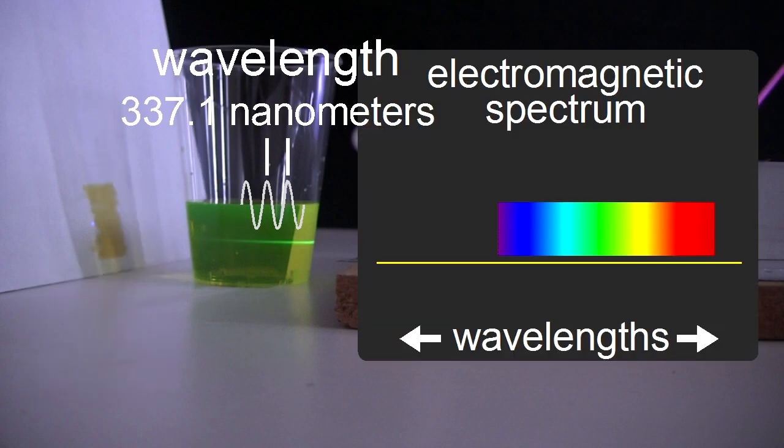This is the electromagnetic spectrum. That's the set of all wavelengths that light comes in, though this is just a part of it. The tea laser's 337.1 nanometers is here. The visible light that we see with is in this range here, from violet to red,